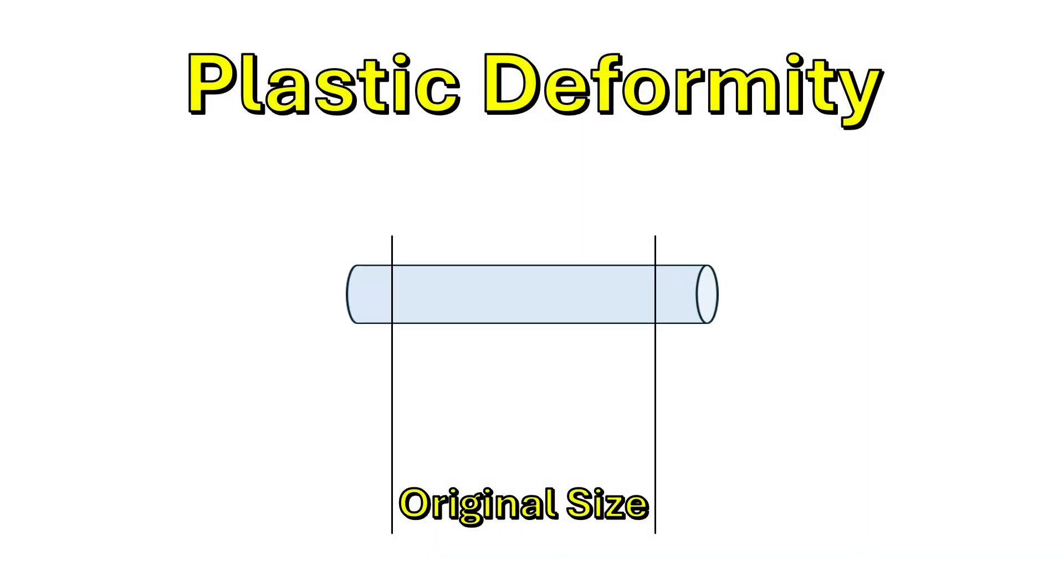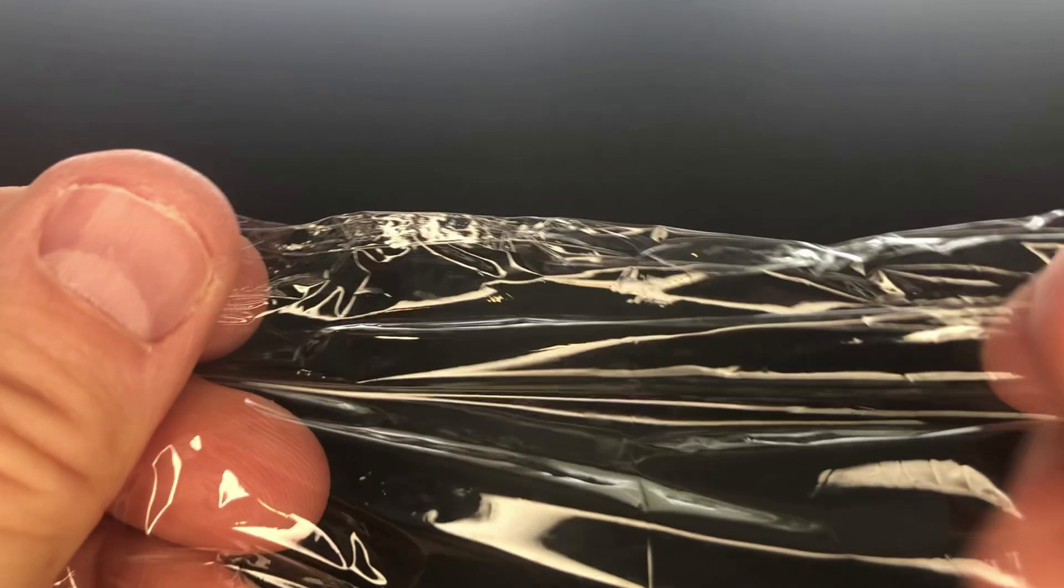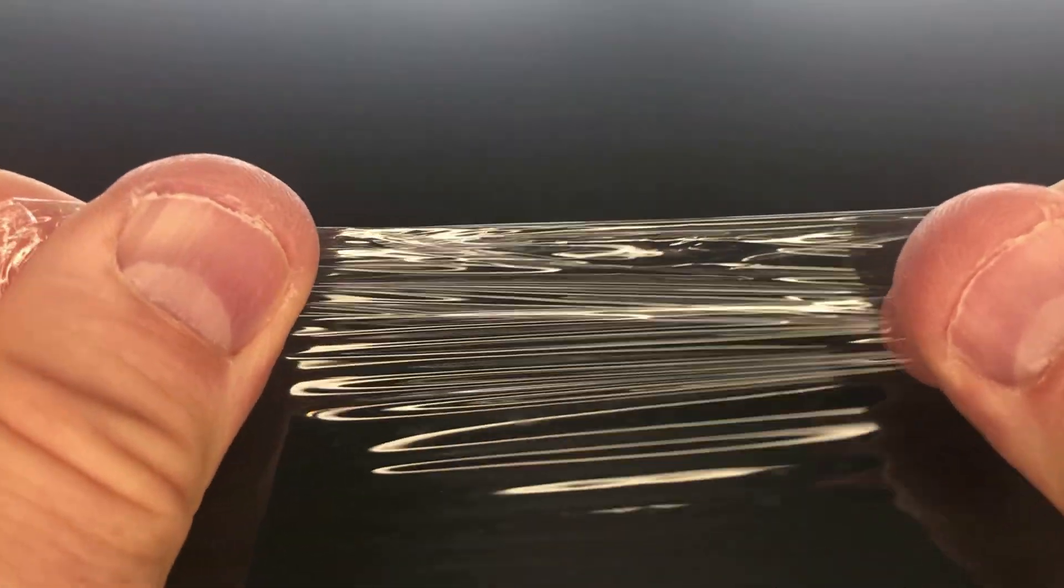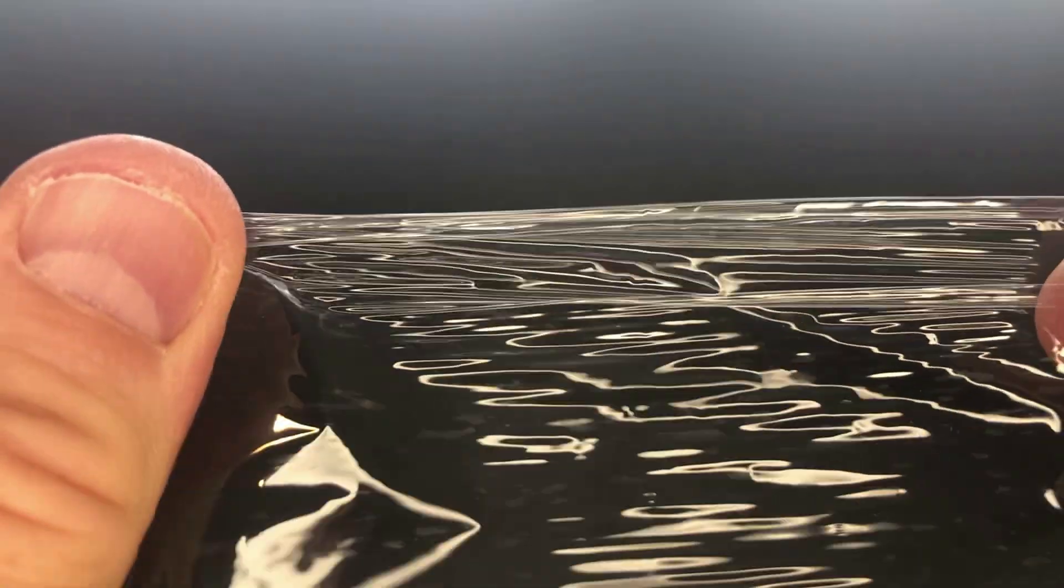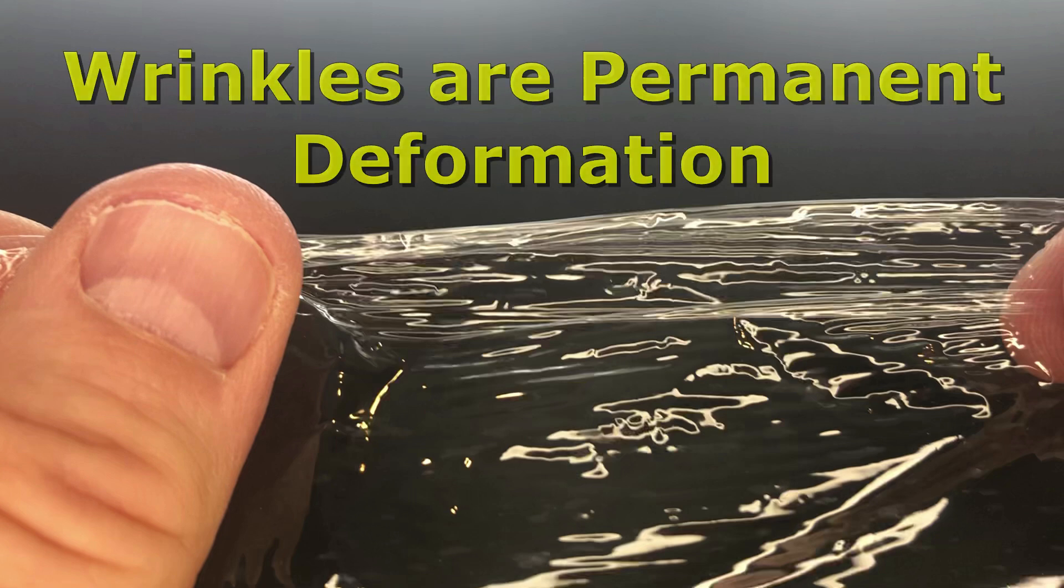In contrast, plastic deformity is permanent. The reason for this is that there is now damage being done to the molecular structure of the material. A great example of plastic deformity occurs when plastic wrap is stretched. The wrinkles in the plastic wrap that are left behind after the tension is removed are signs of permanent damage done to the plastic material.